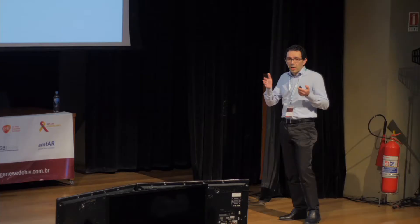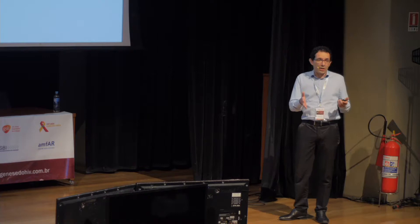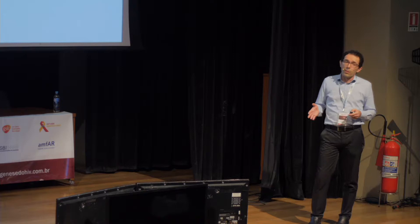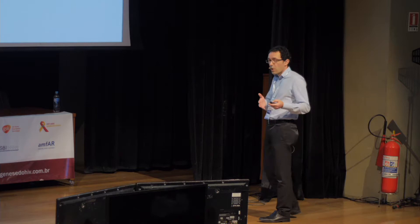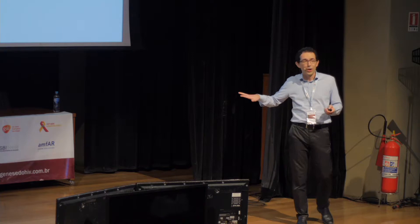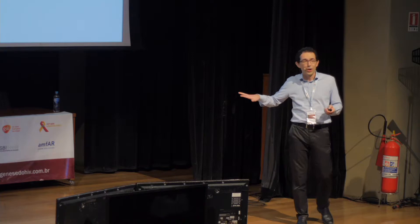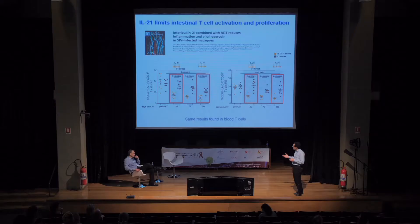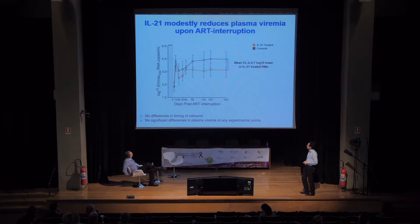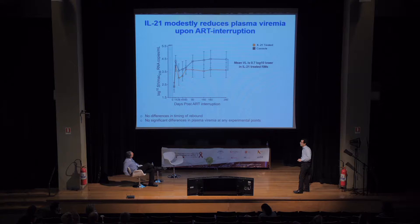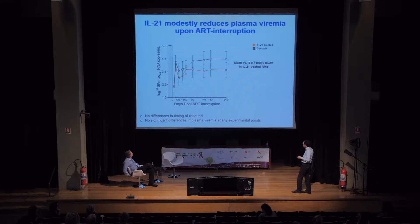With lower inflammation at ART interruption, we asked whether reducing inflammation had an impact on viral rebound. We used SIVmac239, a very pathogenic virus that is very difficult to impact for viral rebound. Both groups rebounded without any significant delay in time to rebound, and despite a 0.7-log lower plasma viremia there was no significant difference in setpoint viral load over the eight months following ART interruption.